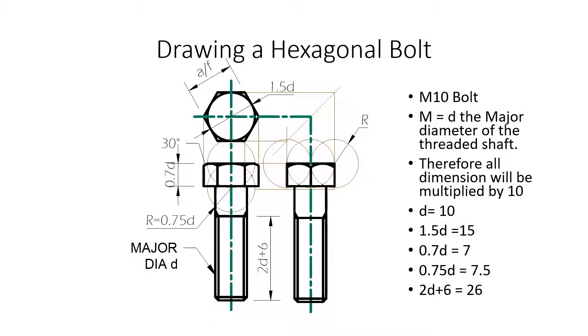For this demonstration here, we're going to be drawing a M10 bolt. What that means, M10 means major diameter. So, the major diameter of the shaft is 10 millimeters.